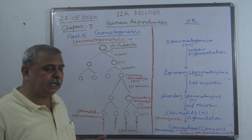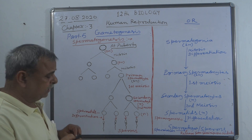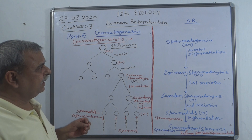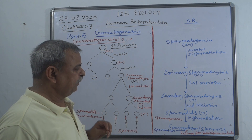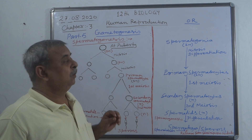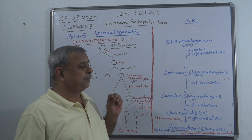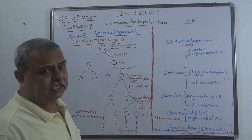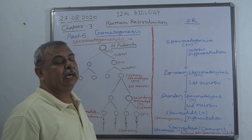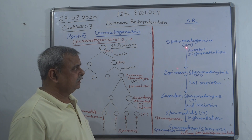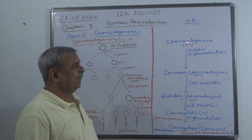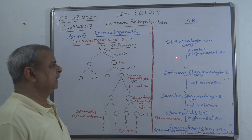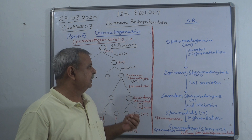In a similar pattern, when we talk about the formation of sperms — the male gametes — it is referred to as spermatogenesis, which occurs in the testes. Each spermatogonium is diploid. The spermatogonia, or sperm mother cells, undergo mitosis and differentiation to increase their number.